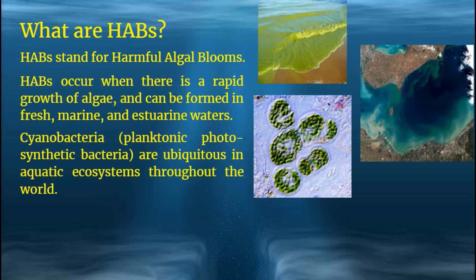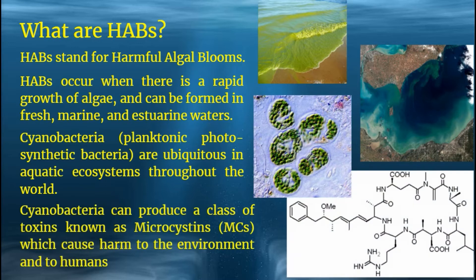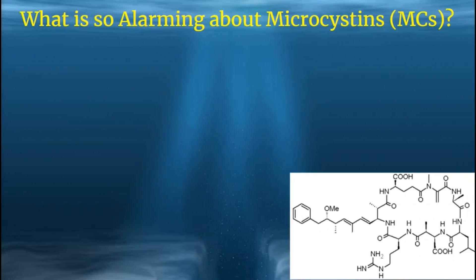Cyanobacteria can produce a class of toxins known as microcystins, which cause harm to the environment and to humans. Essentially, the bacteria is the pathogen, the bacteria produces the toxins, and the toxins produce the cyanoHABs. Microcystins are the toxic secondary metabolites produced by the pathogen cyanobacteria, aka Microcystis aeruginosa. They are the most commonly observed cyanotoxin in United States lakes.